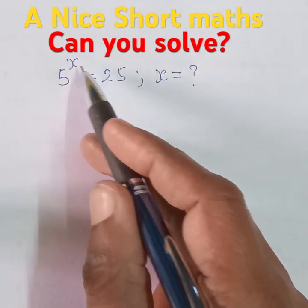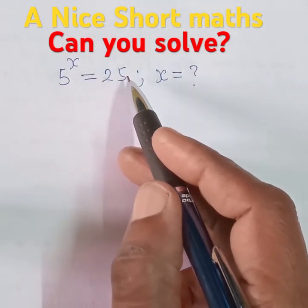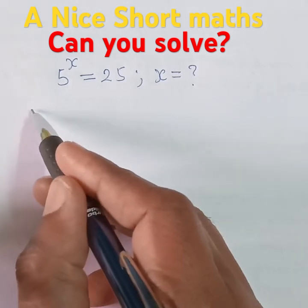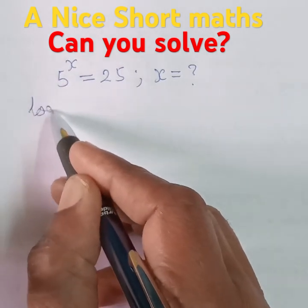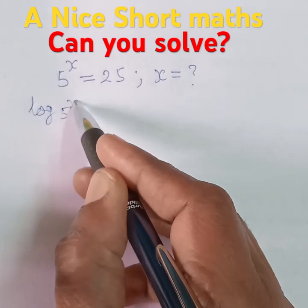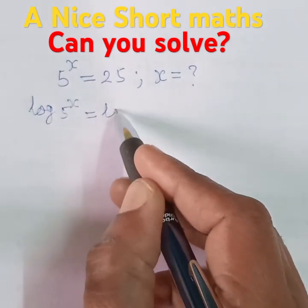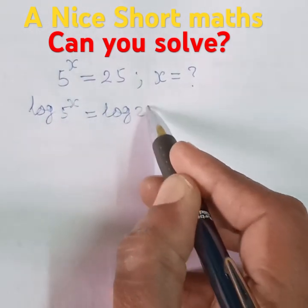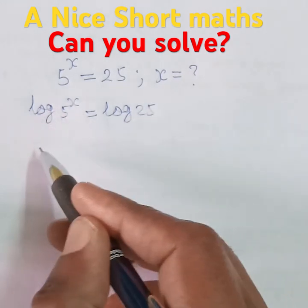If 5 to the power x is equal to 25, then what is the value of x? Take log on both sides. Then we get log of 5 to the power x is equal to log of 25. According to the logarithm rule, this will be x log 5 is equal to log of 25.